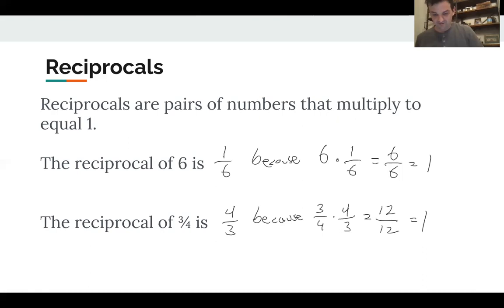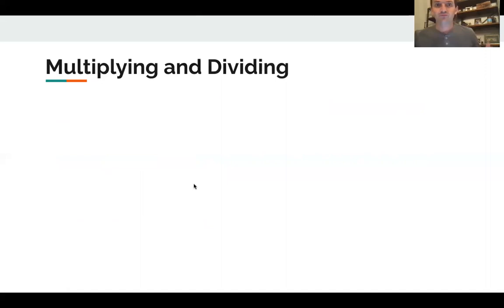So you might notice something interesting about reciprocals, which is it's basically the same fraction flipped, right? The numerator and denominator flip. And that's even true here, because six goes to the denominator, and then the invisible one that's underneath all whole numbers goes to the numerator. So in order to find the reciprocal, you simply flip the numerator and denominator, because if you take a fraction and flip it and multiply, it's going to equal one.